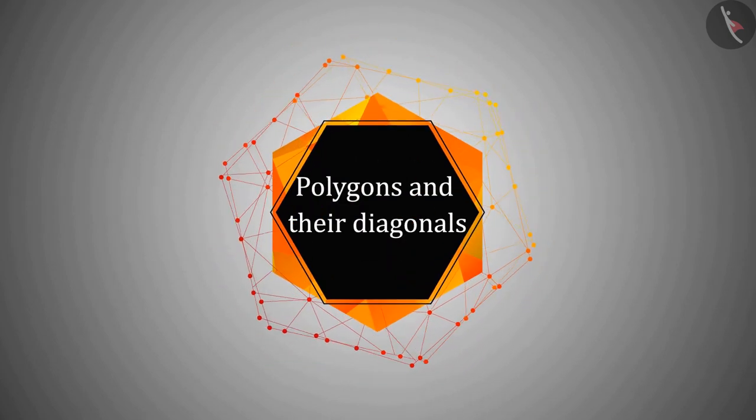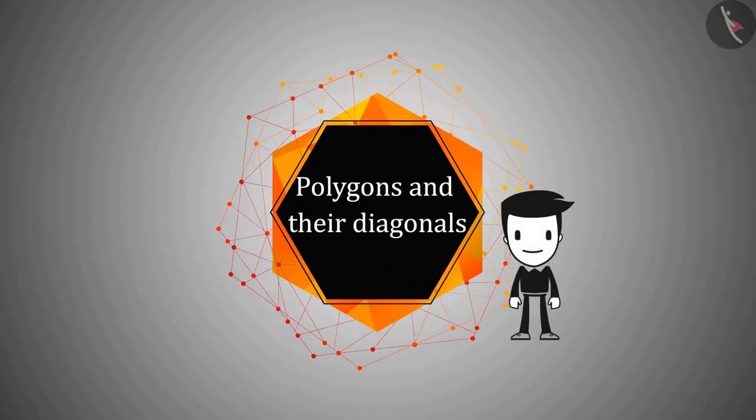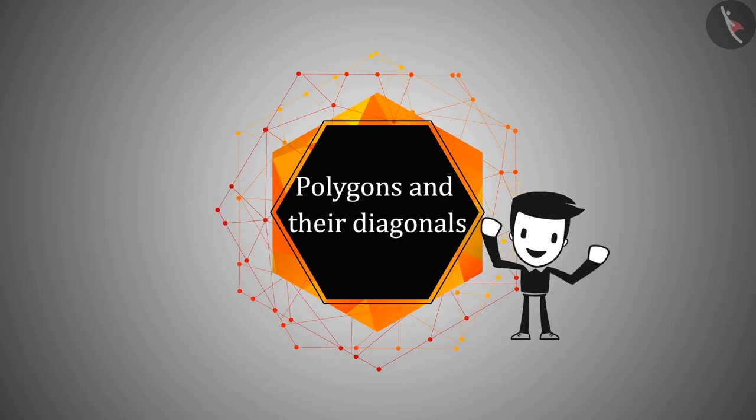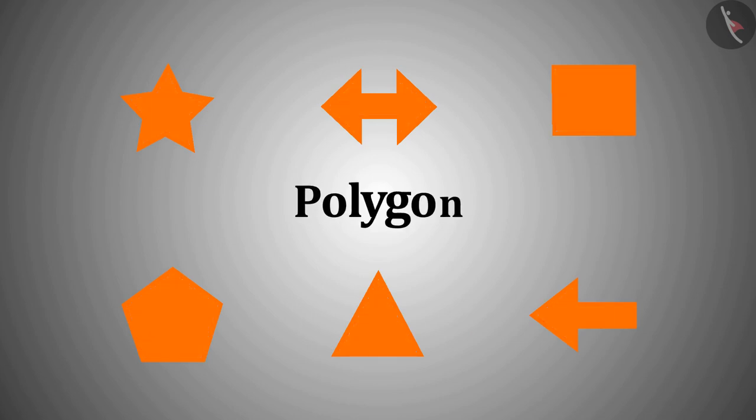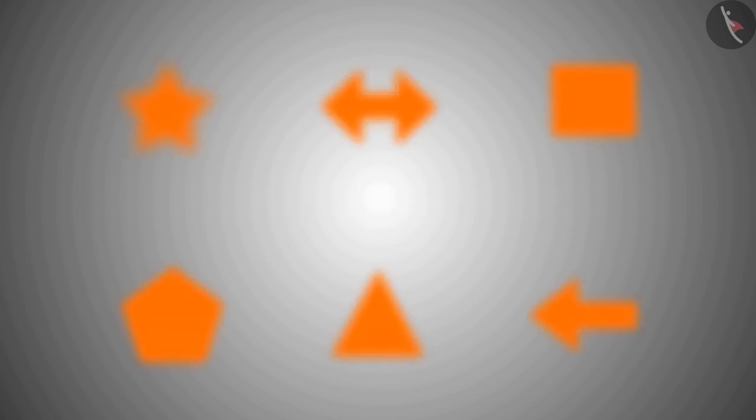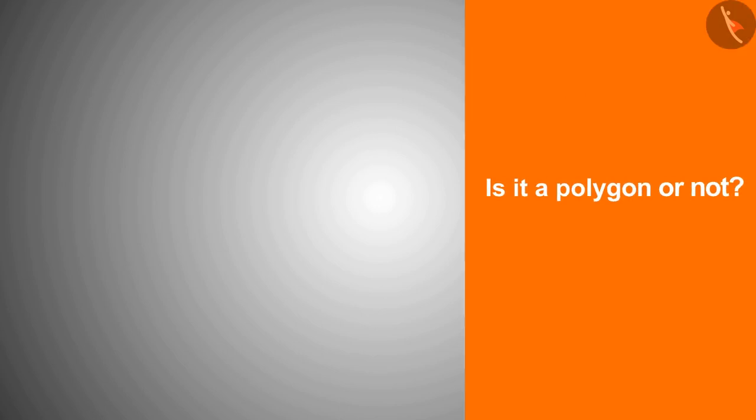You are all welcome. In this video today we will see examples based on polygons and its diagonal. You have learned about polygons. Well, now is the time to play a game. The rules of this game are very simple. You will be shown a shape here and you have to tell whether is it a polygon or not.